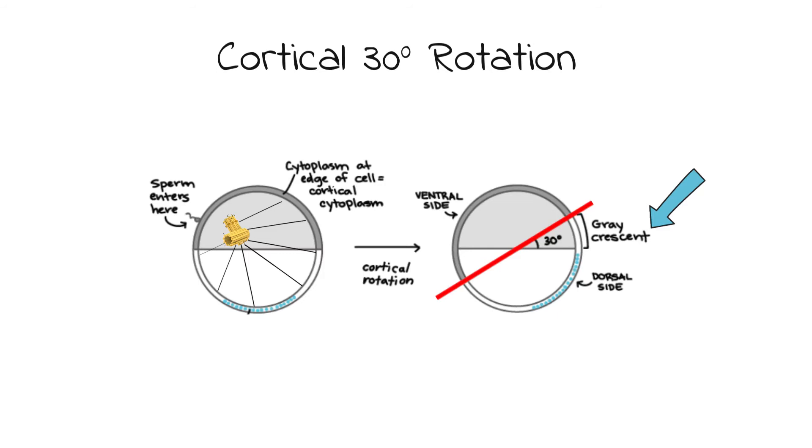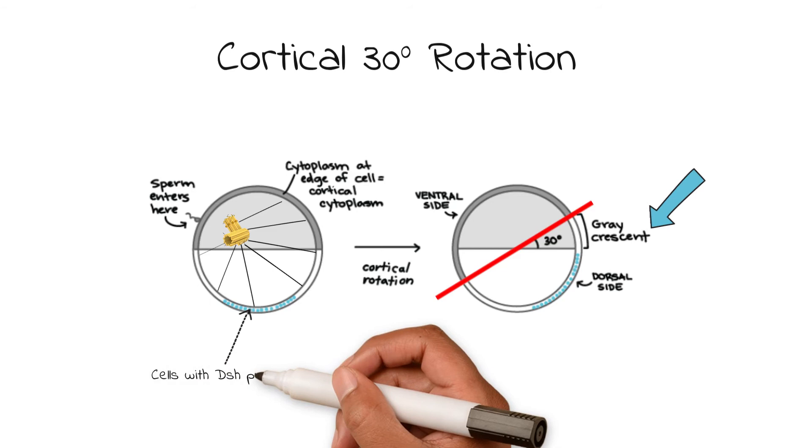Another important part about this rotation is the migration of cells with the DSH protein that were originally at the bottom of the vegetal pole. Now, they are located on the furthest dorsal part of the cell and will be crucial to the creation of the Spemann-Mangold Organizer.